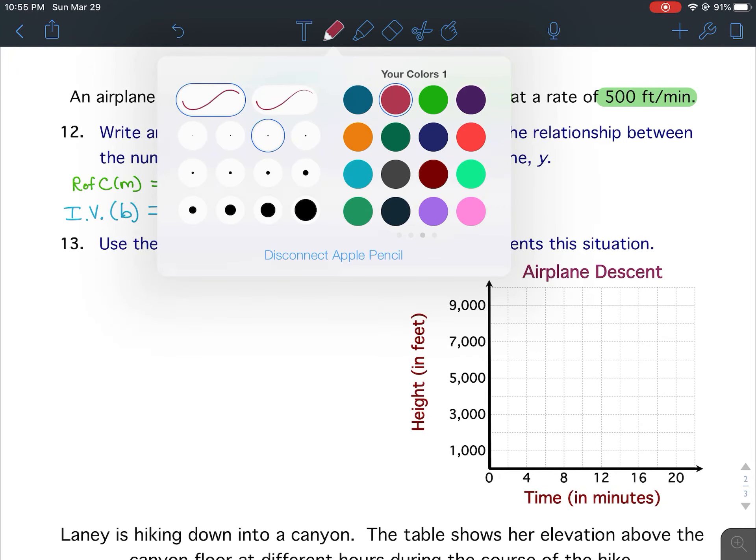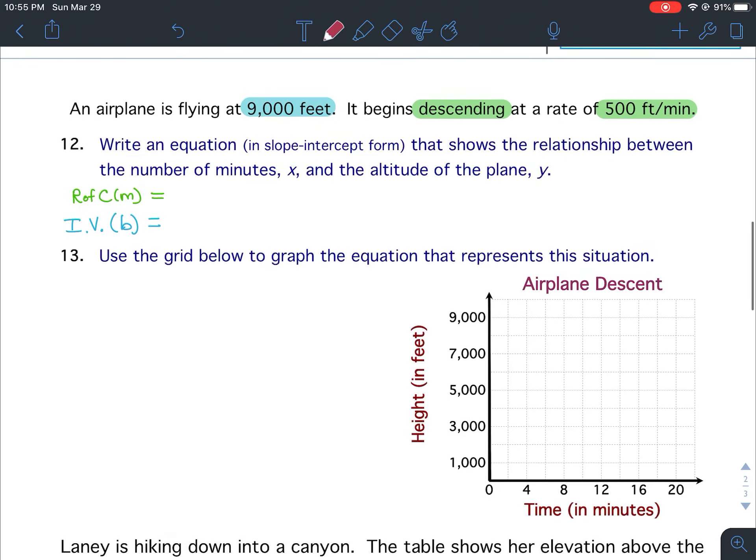Okay, so first of all, we are going to be writing the equation in slope-intercept form. So we are going to be finding y equals mx plus b, and our initial value is this 9,000 feet. So that is where we are starting.